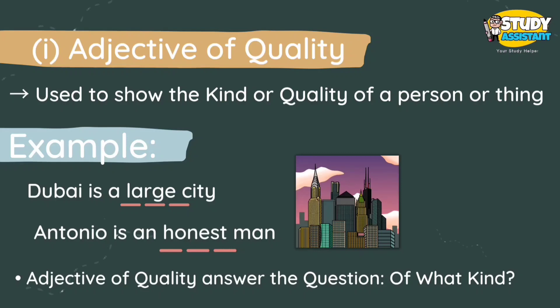Adjective of quality is used to show the kind or quality of a person or thing. For example, 'Dubai is a large city' — here 'large' shows what kind of city Dubai is. 'Antonio is an honest man' — here 'honest' shows the quality of the man. To find an adjective of quality, we ask the question 'of what kind?' So in 'Antonio is an honest man,' we ask 'Antonio is a man of what kind?' and the answer is 'honest' — so 'honest' is an adjective of quality.